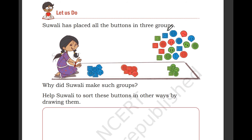Suali has placed all the buttons in three groups: 1, 2, 3, as you can see in the picture. Why did Suali make such groups? To know the color of the buttons easily. Very good.